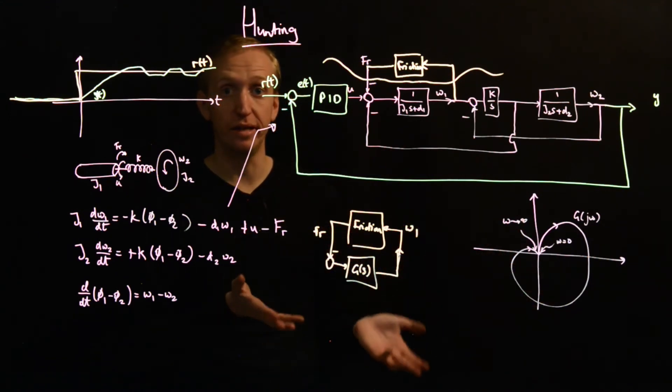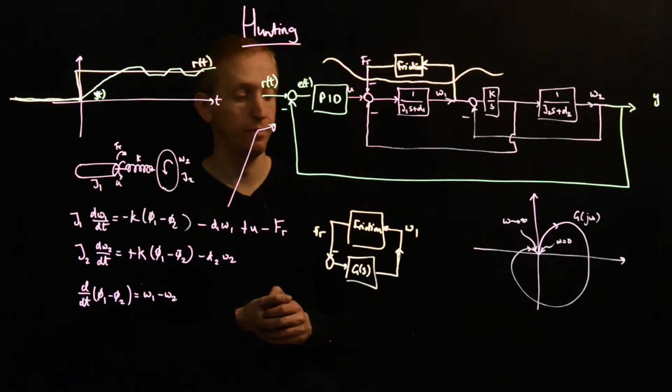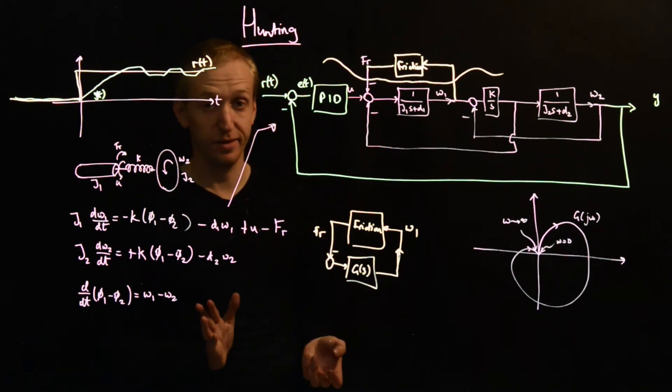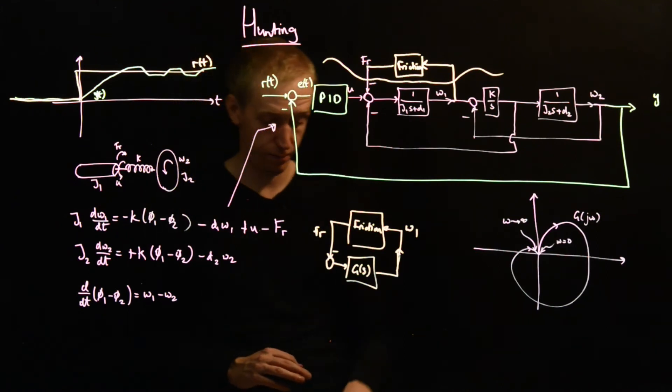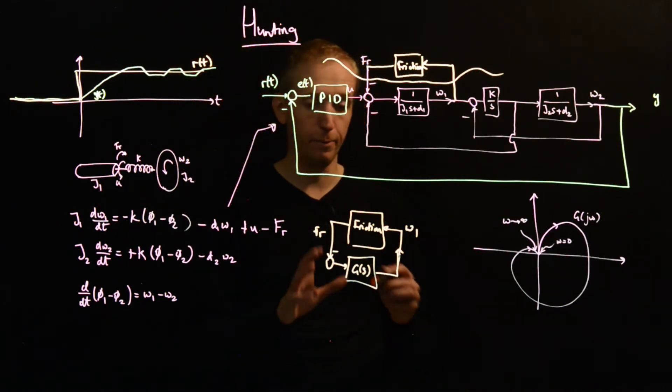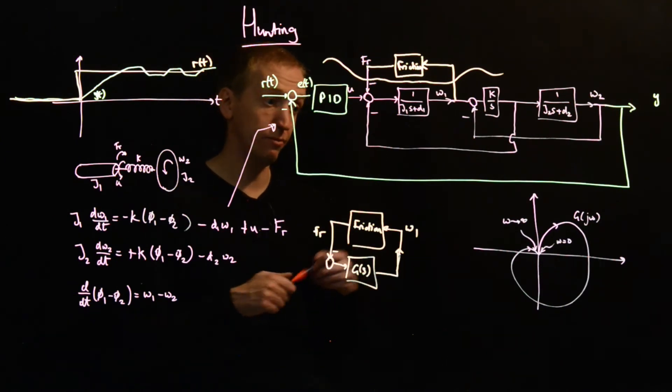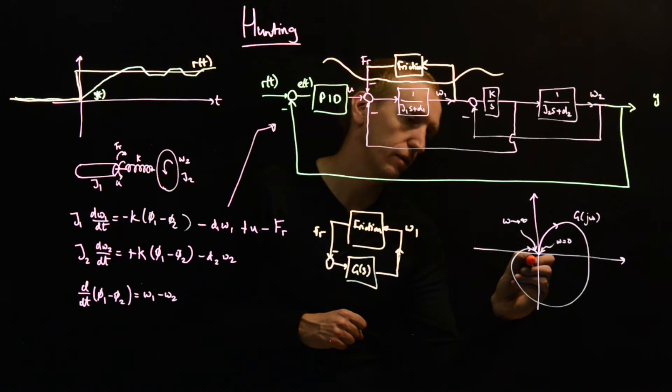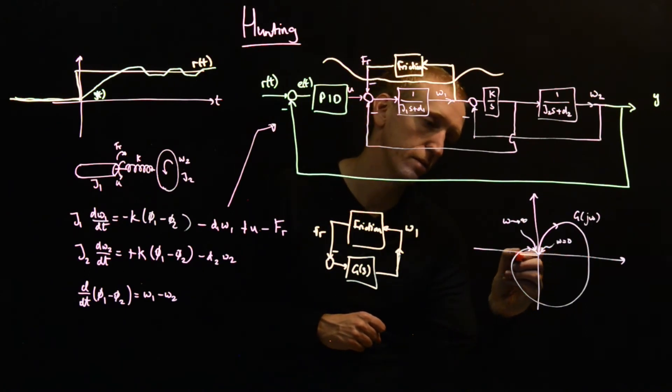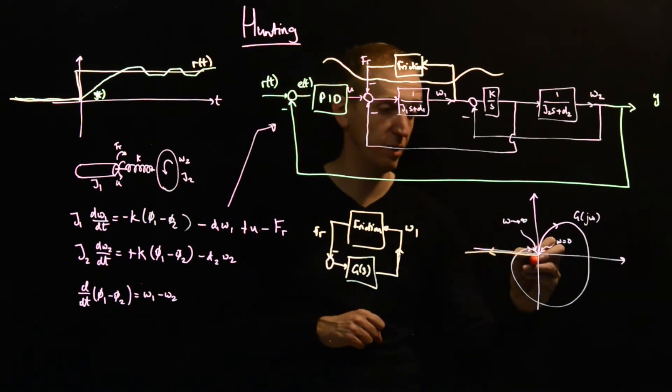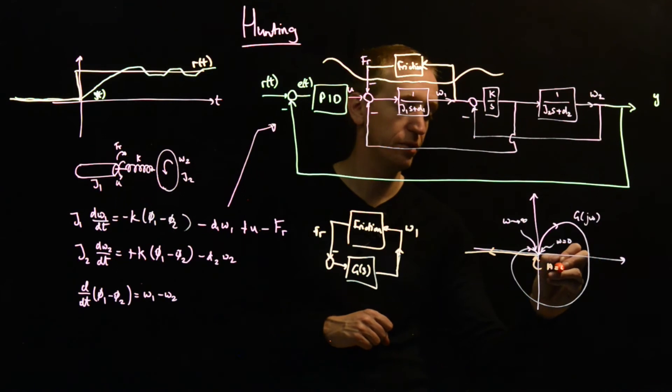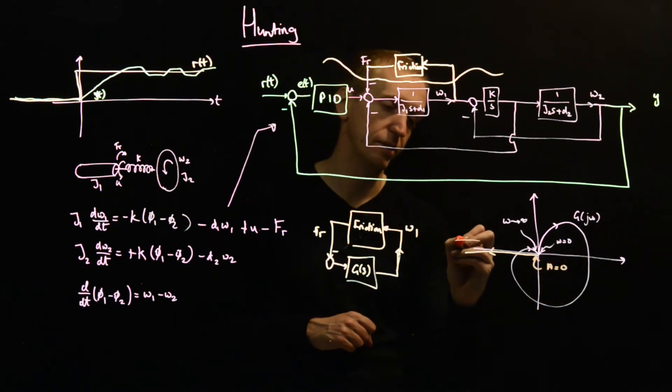And so what you find, you put in some numbers and this is the Nyquist diagram you get. Why might this lead to the emergence of limit cycles? Well, if we take our simple model for friction, which was just our relay, we remember that the describing function for a relay looked like this. So this is the describing function for the relay. This is amplitude is equal to zero. And this is amplitude tends to infinity.